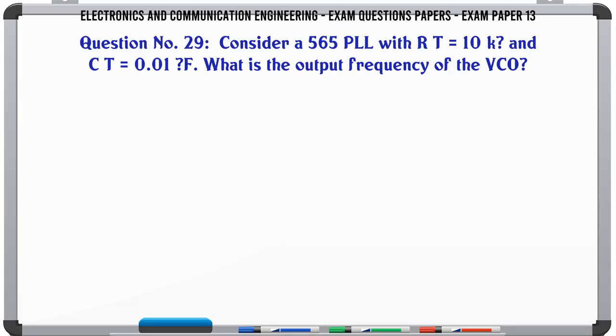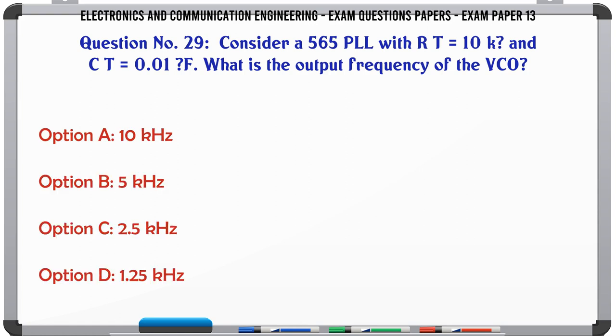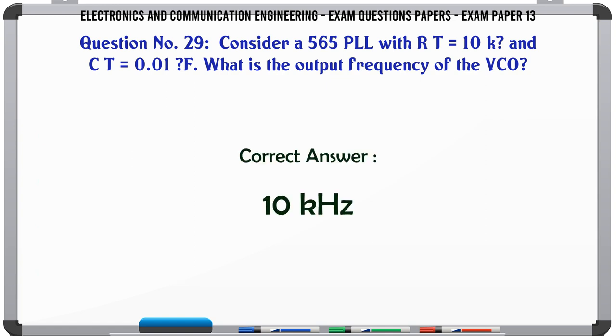Consider a 565 PLL with RT = 10k and CT = 0.01 microfarad. What is the output frequency of the VCO? A: 10kHz, B: 5kHz, C: 2.5kHz, D: 1.25kHz. The correct answer is 10kHz.